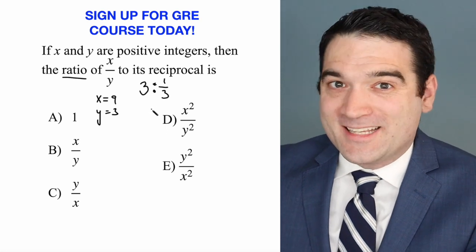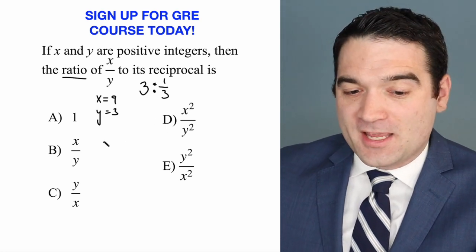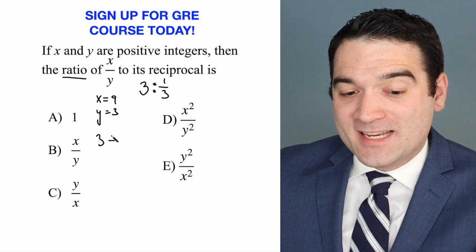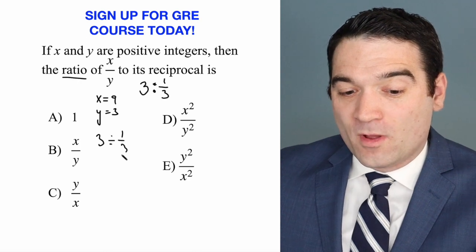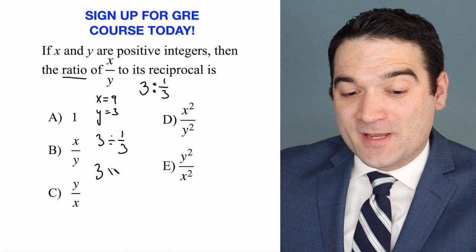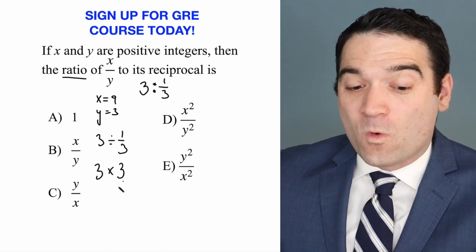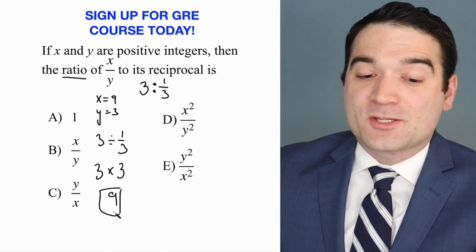Well, remember that a ratio is a division. So effectively what we're saying here is 3 divided by 1 third. Using our fraction rules, that's 3 times 3 or 9. So the answer to this question is 9.